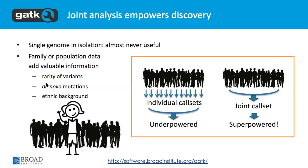You can also include family information, which we do in genotype refinement, to update your likelihood based on population priors and family information.